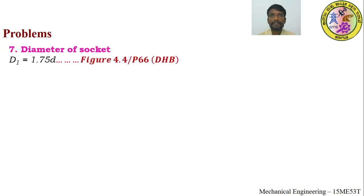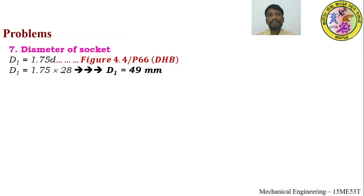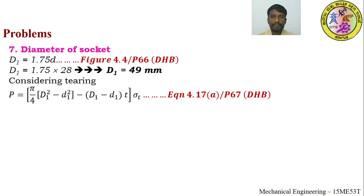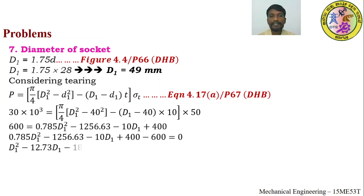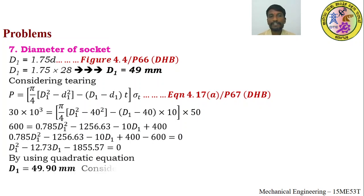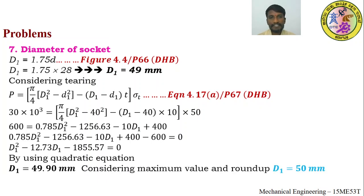Point 7 — Diameter of socket D1: From figure 4.4 (page 66), D1 = 1.75 × d = 49 mm. Considering tearing (equation 4.17a, page 67), a quadratic equation is formed and solved to give D1 = 49.9 mm. Taking the maximum and rounding up, D1 = 50 mm is adopted.